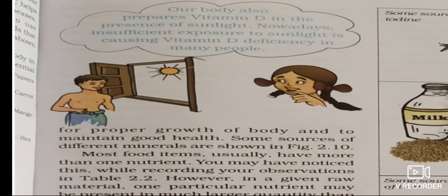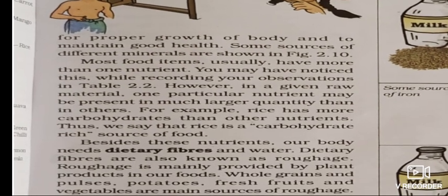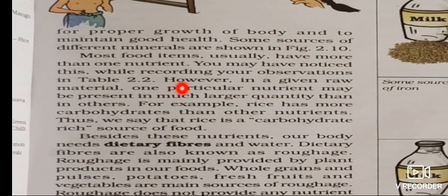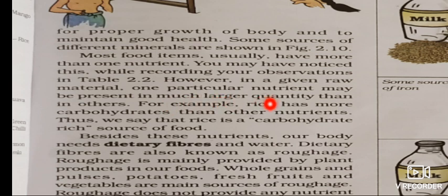For proper growth of the body and to maintain good health, minerals are also needed. Most food items usually have more than one nutrient. In a given food, one particular nutrient may be present in much larger quantity than others. For example, rice has more carbohydrates than other nutrients, so we say rice is a carbohydrate-rich food.